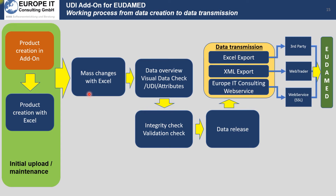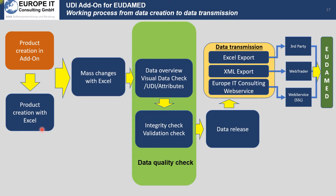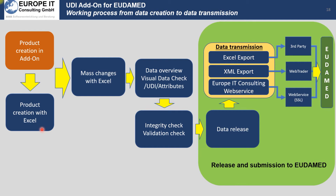The process to maintain your data starts with an initial load on the left side, which I will show in the system. This is a mass upload — product creation with Excel is possible, as well as specific maintenance. Then you switch to mass change, where you can change many devices at one time using Excel. After a visual check to verify data quality, the last step is data submission to the Eudamed database via Excel export, XML export, or our web service for a machine-to-machine connection.